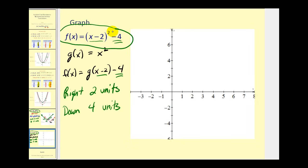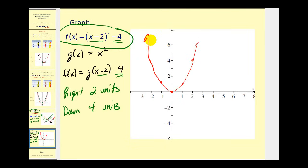To graph the given function, we first sketch the parent function G of X equals X squared — a parabola with vertex at the origin. Key points include the vertex (0, 0), (1, 1), (2, 4), and their mirror images on the other side of the Y axis. We'll now pick these key points and shift each of them right 2 units and down 4 units.